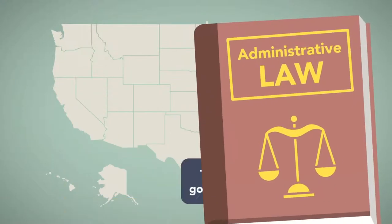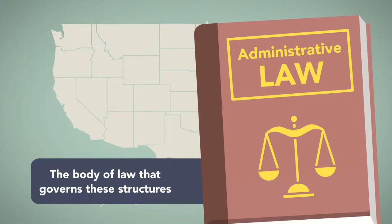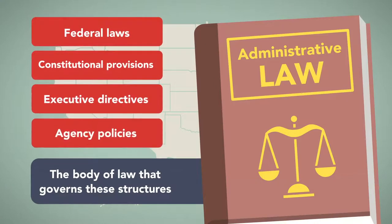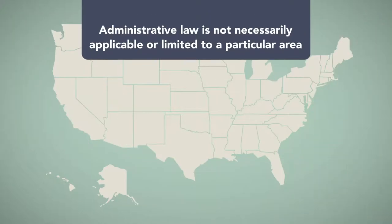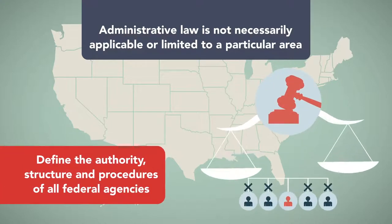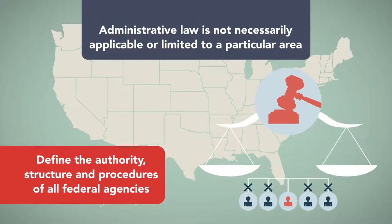Administrative Law is the body of law that governs these structures. It includes federal laws, constitutional provisions, executive branch directives, and internal agency policies which govern the functioning of the federal agencies. Administrative Law is not necessarily applicable or limited to a particular area, but defines the authority, structure, and procedures of all federal agencies.